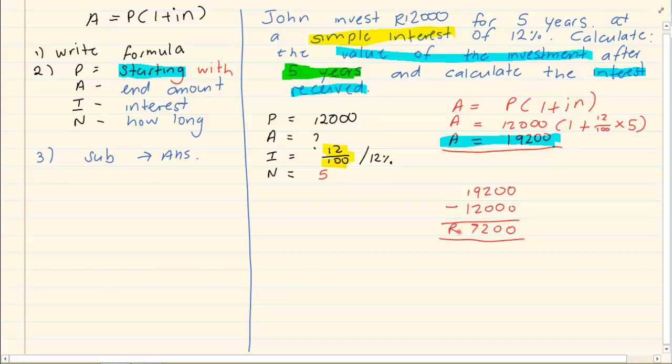That is 7,200. So how much interest did he receive in the five years? 7,200.